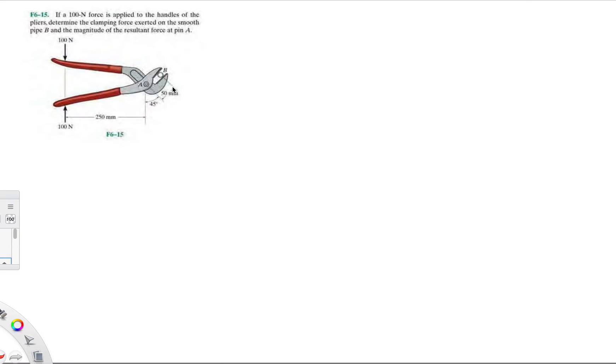Then we solve for all the forces acting on that one piece. In this case, we're trying to find the 100 Newton force applied to the handles of this plier and exerted on the smooth pipe B. The smooth pipe means you don't take friction into account, and then we want to find the magnitude of the resultant force of pin A.